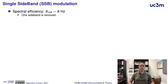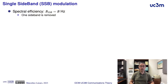In this video, we are going to introduce the single sideband modulation. In this modulation, the bandwidth of the modulated signal is equal to the bandwidth of the information — the bandwidth of the modulating signal. To obtain this spectral efficiency, one of the two sidebands that we have in a double sideband modulated signal is removed.